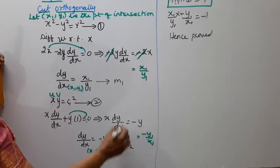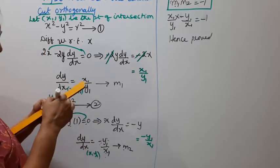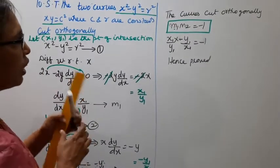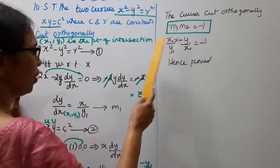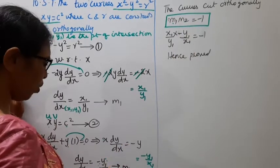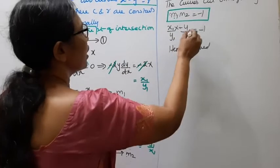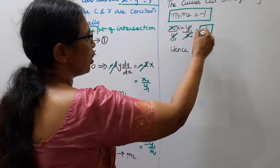m₁ is x₁/y₁, m₂ is -y₁/x₁. The curves cut orthogonally when m₁m₂ equal to -1. m₁ is x₁/y₁, m₂ is -y₁/x₁. x₁x₁ cancel, y₁y₁ cancel, equals -1.